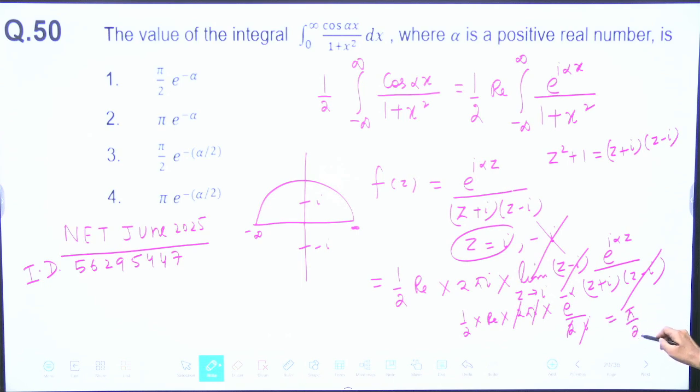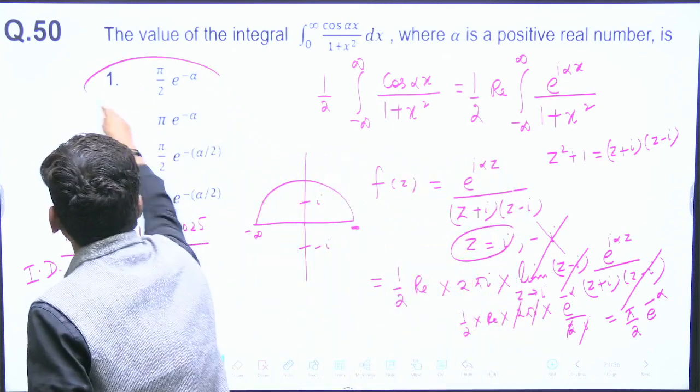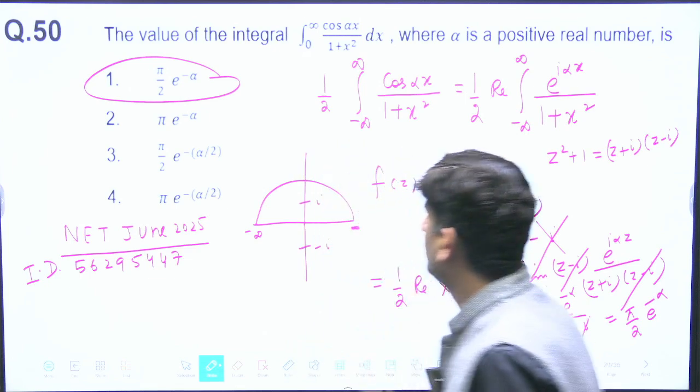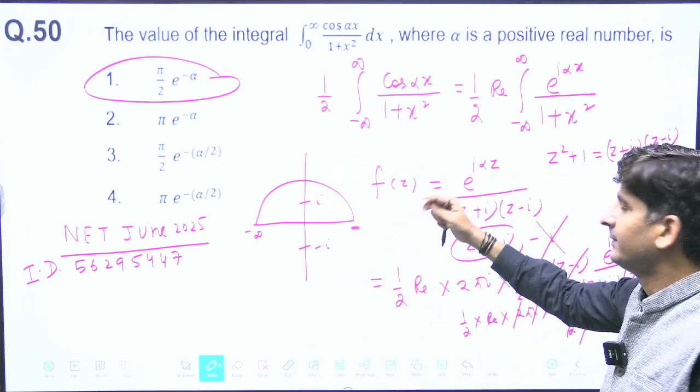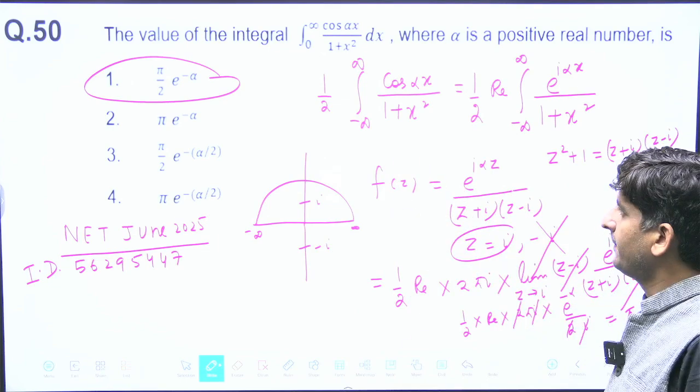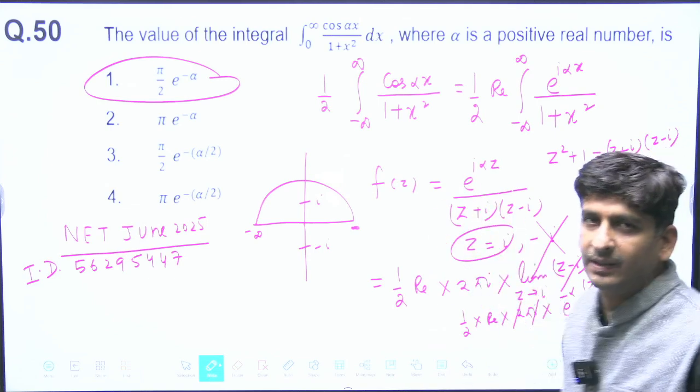So π/2 times e^(-alpha) is your first option. You should do all the Fourier integrals because this time this has come. Next time some other integration may come. Lots of questions are given in Kreyszig; you can practice from there. Thank you.